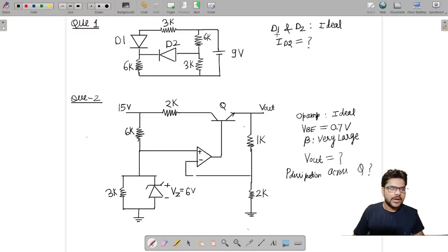The problem says we have to find out diode current ID2, that is the current flowing in this diode. In this circuit, we have two diodes D1 and D2 which are connected with four resistors and one 9-volt battery. We are given that D1 and D2 are ideal, and we are going to find out ID2.